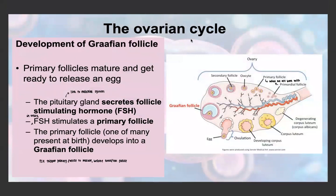Looking in more detail at the ovarian cycle, starting with the development of the Graafian follicle: the primary follicle is located in the ovary and is formed while the woman is still in the womb. The primary follicle matures and gets ready to release an egg — the follicle contains the egg inside it. We're born with this primary follicle, and over the course of one ovarian cycle it matures into a Graafian follicle, from which the egg is released.